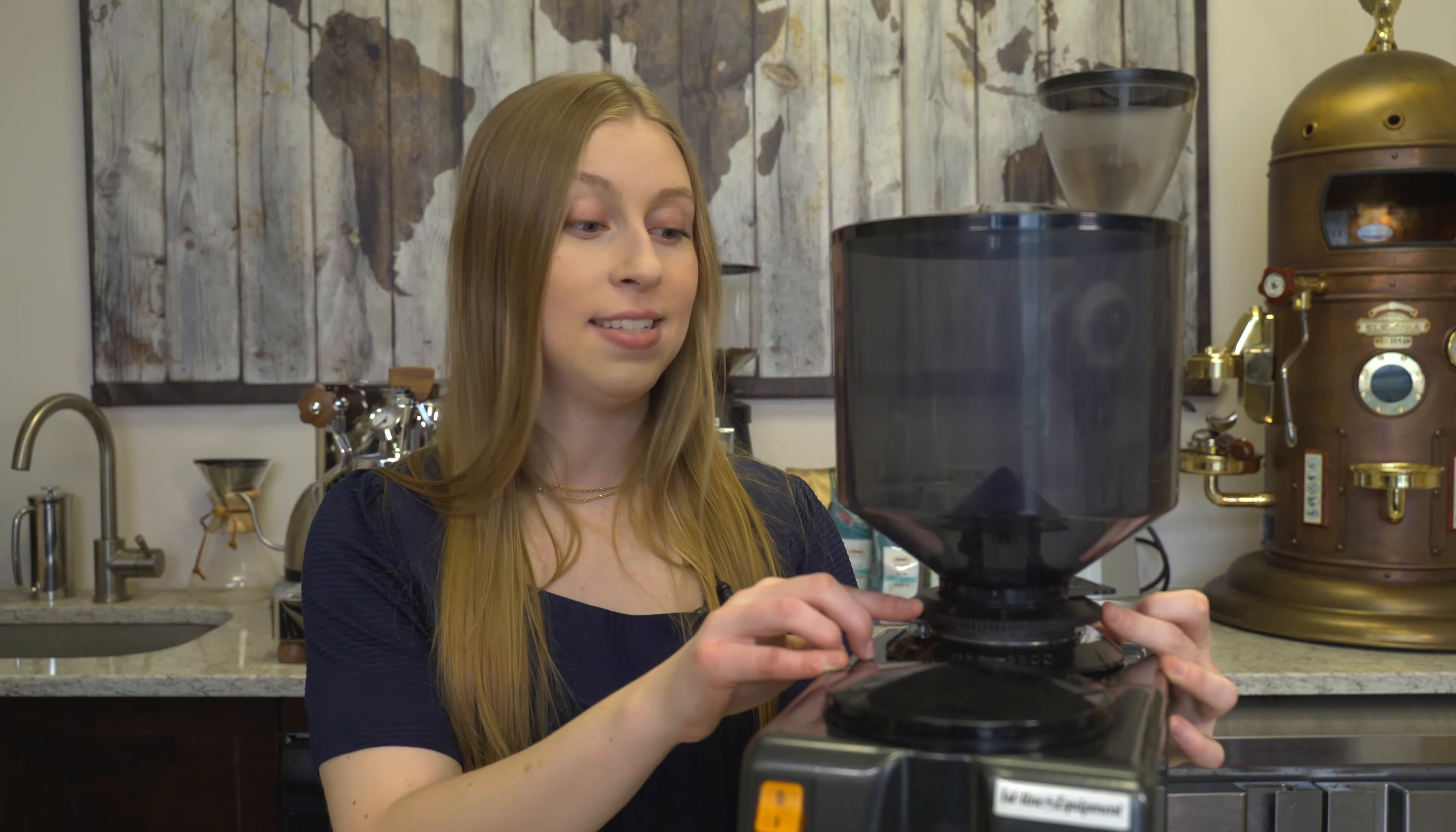Now you'll also notice that underneath the bean hopper, there's a numbered adjustment dial for your grind settings. If you turn this clockwise, that's how you're going to make your grinding adjustments finer, whereas if you turn it counterclockwise, that's how you're going to make a more coarse grind adjustment.